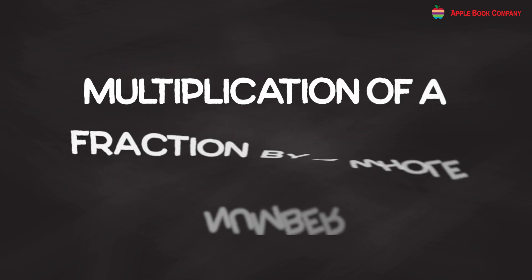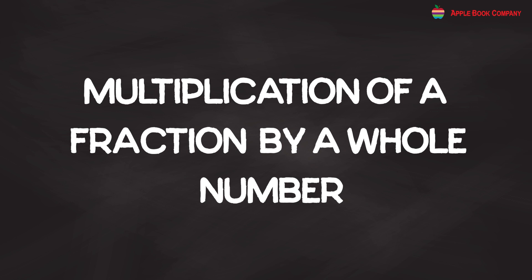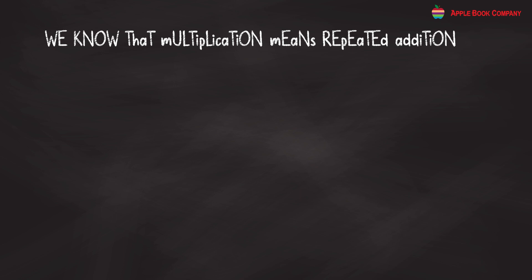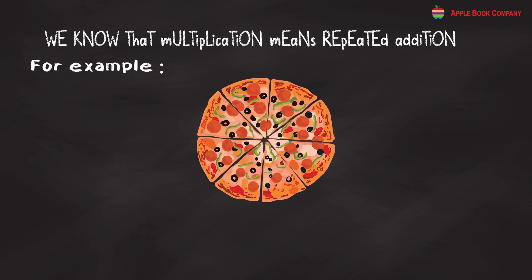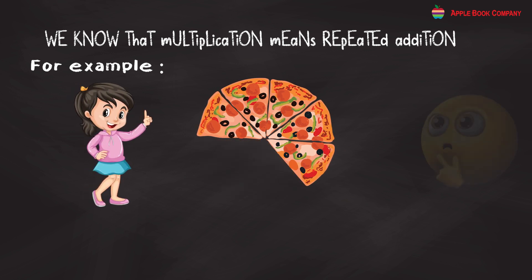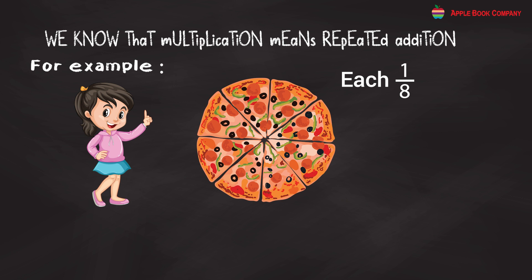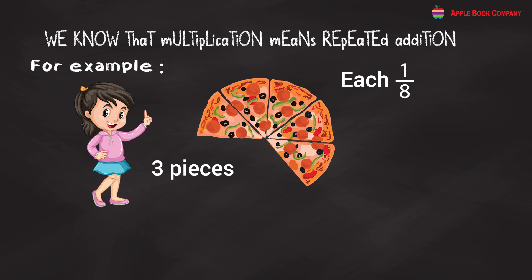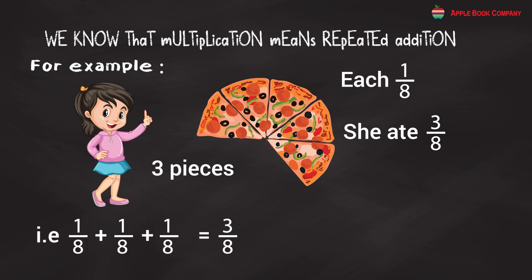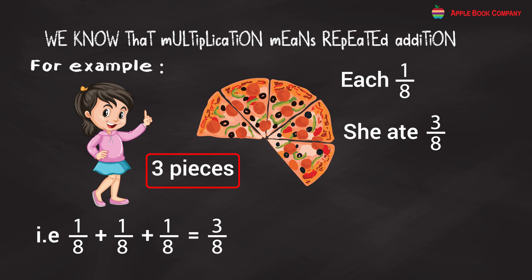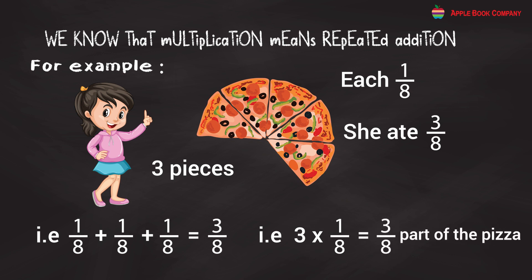Multiplication of a Fraction by a Whole Number. We know that multiplication means repeated addition. For example, a pizza was cut into 8 equal pieces. Mohini ate 3 pieces. What part of the pizza did she eat? Each piece represents 1/8 part of the whole and Mohini ate 3 pieces, meaning she ate 3/8 part of the pizza. That is, 1/8 + 1/8 + 1/8 = 3/8. So, 3 × 1/8 = 3/8 part of the pizza.